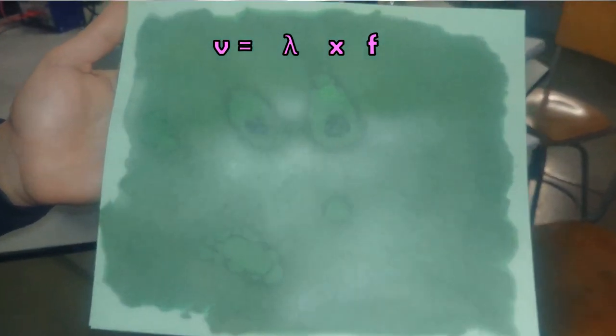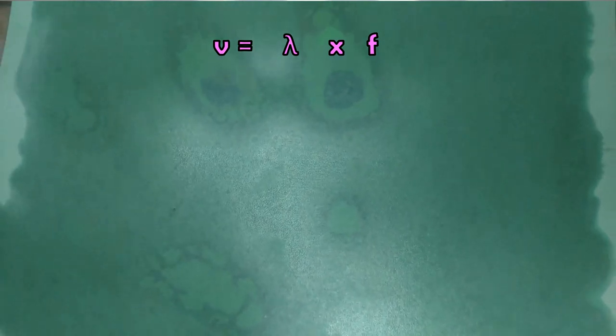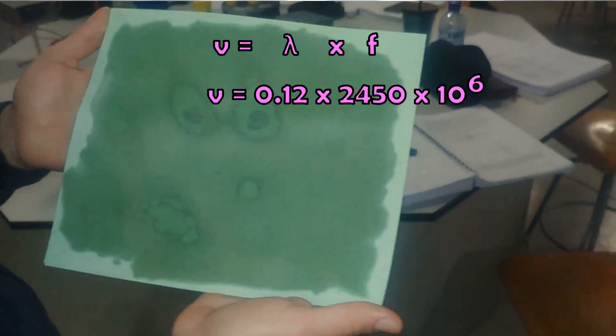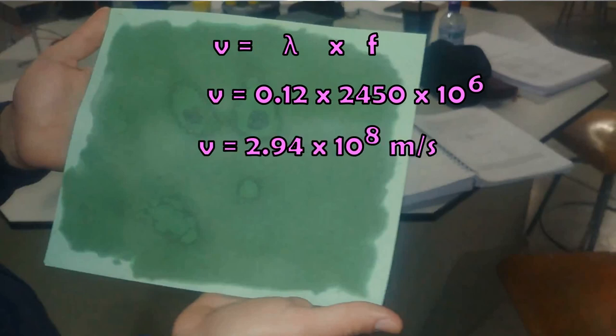Using the wave equation, wave speed is wavelength times frequency. We have our wavelength, 12 centimeters, 0.12 meters, times our frequency, 2450 million hertz, equaling 2.94 times 10 to the 8th. Rounded to one significant figure is 3 times 10 to the 8th. Fantastic! We've actually agreed with the accepted value for the speed of light in a vacuum.